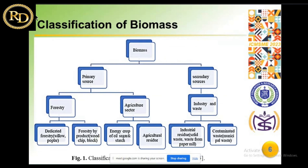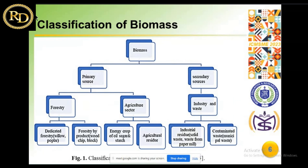Biomass is classified by two major sources: primary sources and secondary sources. Primary sources include forestry and the agricultural sector. From forestry we get dedicated forestry products such as wood, willow, and blocks. From the agricultural sector we get agriculture residues including crops, oils, sugar, and agricultural residue. Secondary sources include industrial and waste sources, such as industrial residues, solid waste, waste from paper mills, and municipal waste.